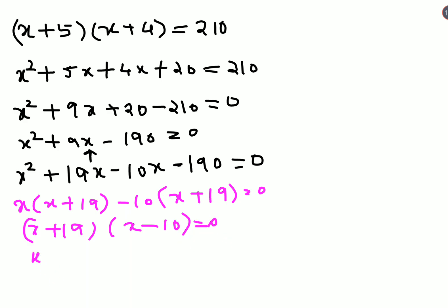So we have (x+19) equals to 0, or (x-10) equals to 0. Therefore, the value of x is -19, or the value of x equals 10.